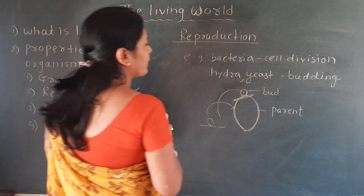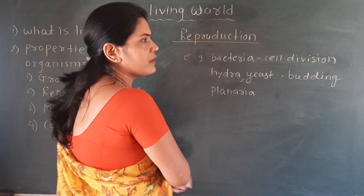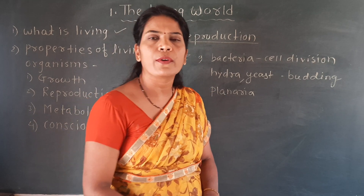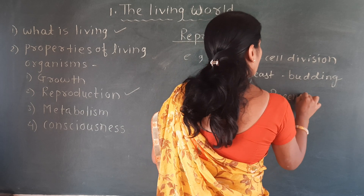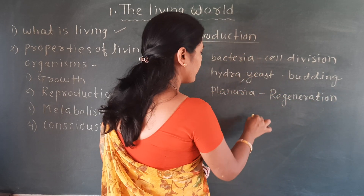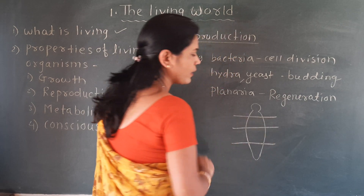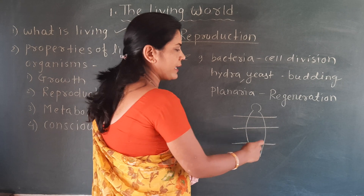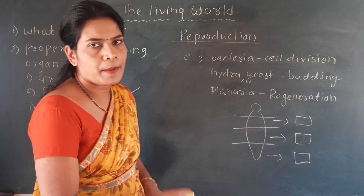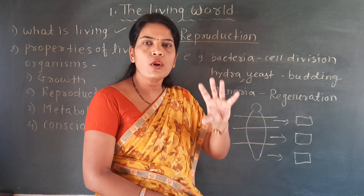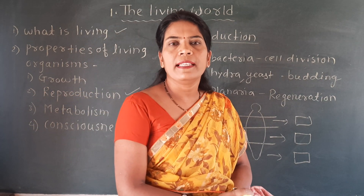Another example of reproduction in lower organisms is found in planaria, an example of the phylum Platyhelminthes, which we also call flatworms. Planaria reproduces by the process of regeneration. If we cut the body of planaria into a number of fragments, each cut part of the planaria will develop a new complete body like that of the parent. That process of reproduction is called regeneration.